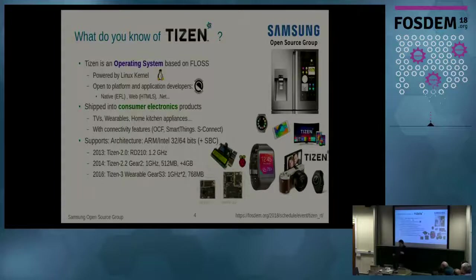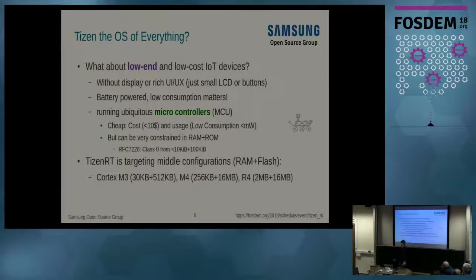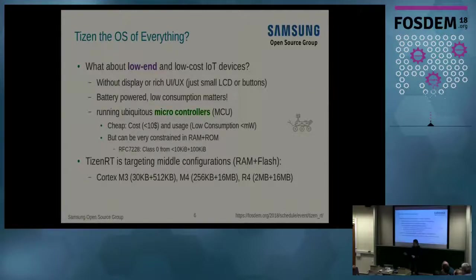If you look at the support of Tizen, I've listed a couple of devices. They are quite powerful — even your smartwatch is similar to a computer you used a couple of years ago. So there is a part where this operating system doesn't really match very constrained requirements. The lowest constrained devices have less than 10K of RAM and only 100K for flash — probably less powerful than your first computer as a kid.